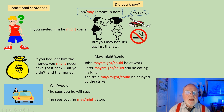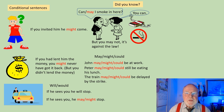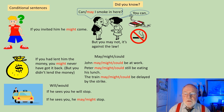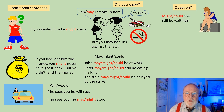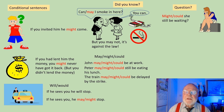May, might and could can be substituted for each other. Look at these sentences: John may, might or could be at work — it's all speculation, all possibilities. Peter may, might or could still be eating his lunch. The train may, might or could be delayed by the strike. But when we look at the question form, it's slightly different. I could say: might she still be waiting? Could she still be waiting? Might is getting a little old-fashioned in modern English, but it's still used and you'll see it certainly in literature.